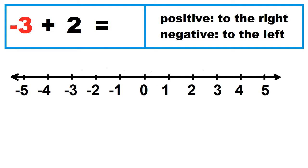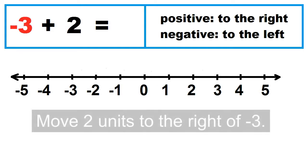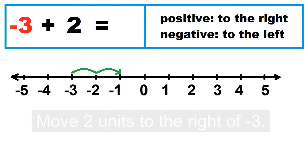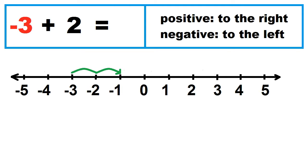Another example: negative 3 plus 2. Move 2 units to the right of negative 3 — 1, 2. Negative 3 plus 2 equals negative 1.